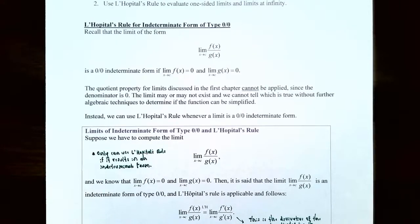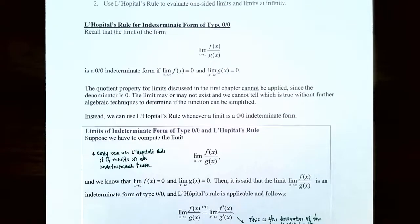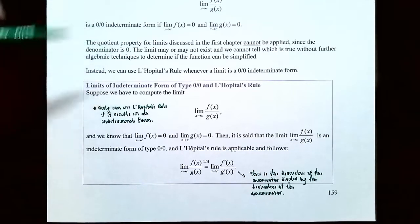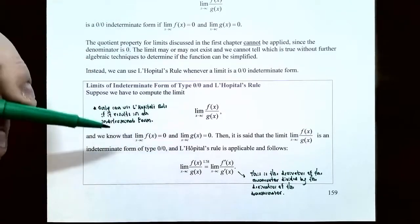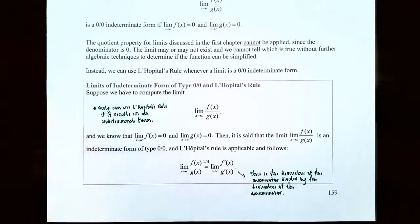Earlier in the course we talked about using algebraic techniques such as factoring or multiplying by the conjugate radical to simplify the function and find the limit's value. Instead of using those algebraic techniques, we're going to use a derivative technique — L'Hôpital's rule — whenever a limit is a 0/0 indeterminate form. Suppose the limit as x approaches c of f(x) divided by g(x) has both numerator and denominator limits equal to 0; then it is an indeterminate form of type 0/0 and L'Hôpital's rule is applicable.